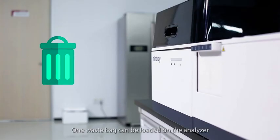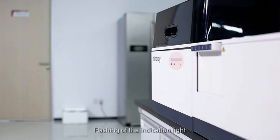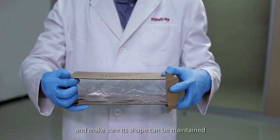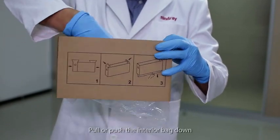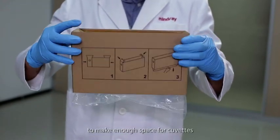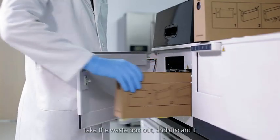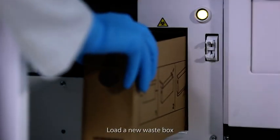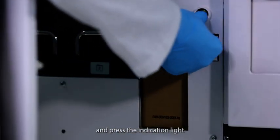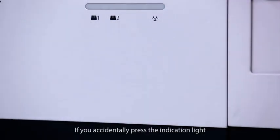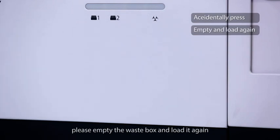One waste bag can be loaded on the analyzer. Flashing of the indication light means it needs replacement. Shape the waste container to form a box and make sure its shape can be maintained. Pull or push the interior bag down to make enough space for cuvettes. Open the door, take the waste box out and discard it. Load a new waste box and press the indication light so that the software can refresh the remaining volume of the waste box. If you accidentally press the indication light, please empty the waste box and load it again.